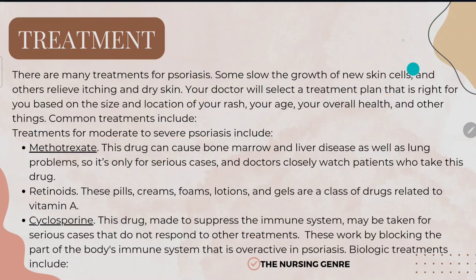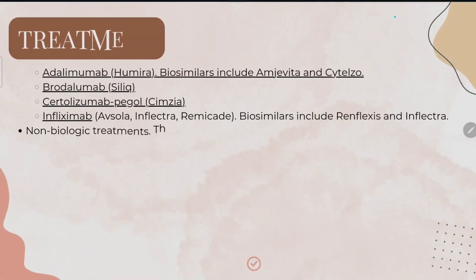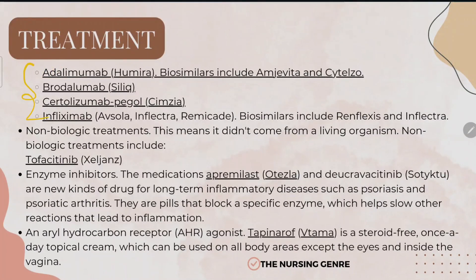Biologic treatments include infliximab, certolizumab, brodalumab, and adalimumab. Non-biologic treatments include tofacitinib and enzyme inhibitors, used for inflammatory diseases like psoriasis and psoriatic arthritis.